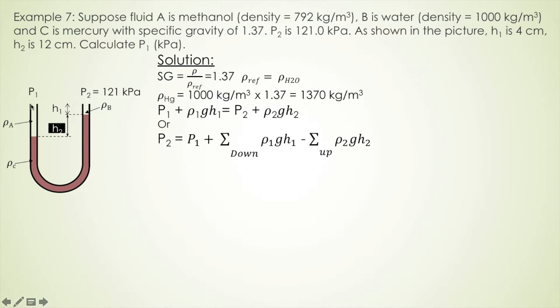Then in this case, we start from P1, and then liquid A is methanol. Methanol initial elevation is right here, and final elevation is right here. It goes down, so we use plus sign. Then liquid C is the manometer liquid starting from here, and then finals here, it goes up, so we use minus sign.